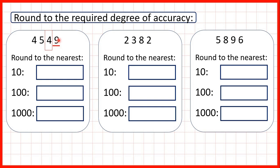When we're rounding, if the digit that we've underlined is five or more, we need to round up, and here we have a nine, so we're rounding up. That means that this four is going to become a five, because when we round up, the digit that we've circled increases by one. So, the four becomes a five, digits to the left stay the same, and digits to the right — the ones digit — turns into a zero. So, that gives us four thousand, five hundred and fifty.